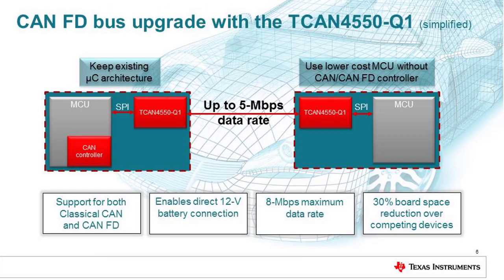Adding CAN-FD to a system is simple and easy using the fully integrated controller and transceiver of the TCAN4550. By connecting to a microprocessor via a standard SPI interface, the TCAN4550 preserves existing hardware and software architectures while allowing data rates up to 5 megabits per second and payload expansion up to 64 bytes per packet. It can also enable overall system cost reduction by allowing simpler microcontrollers to be used.